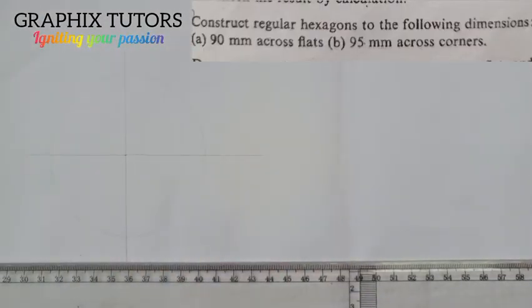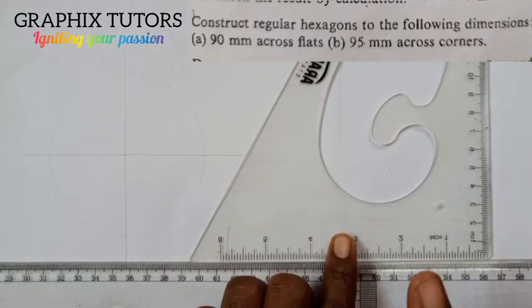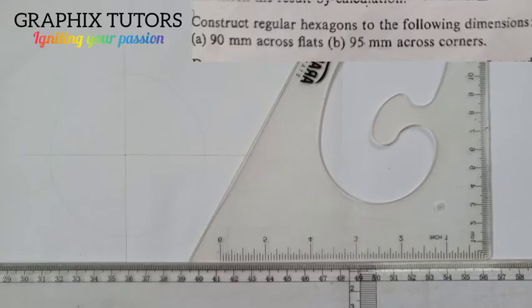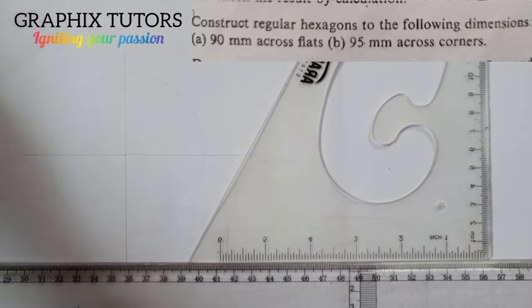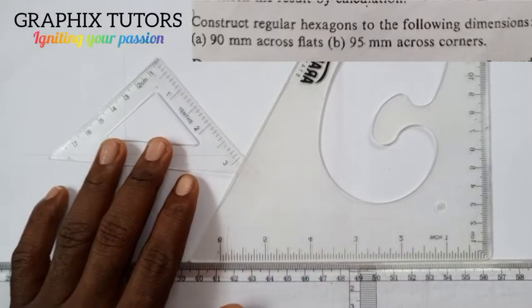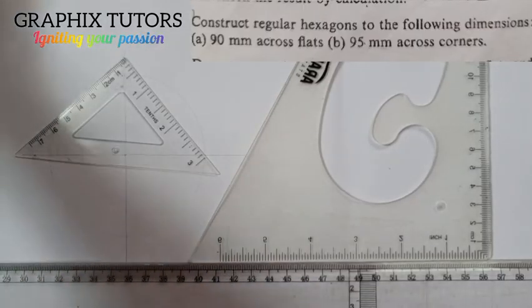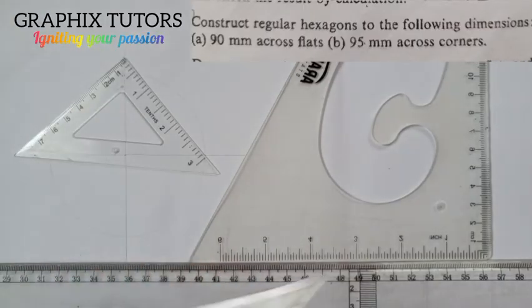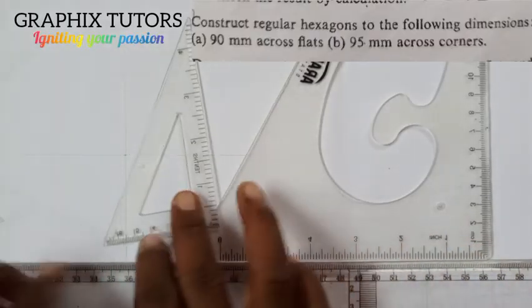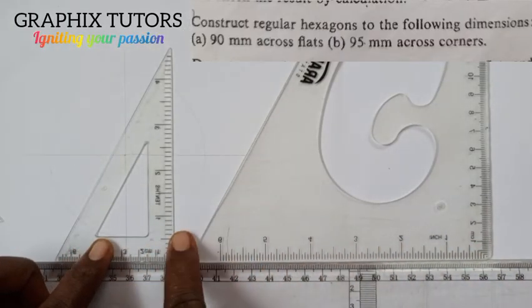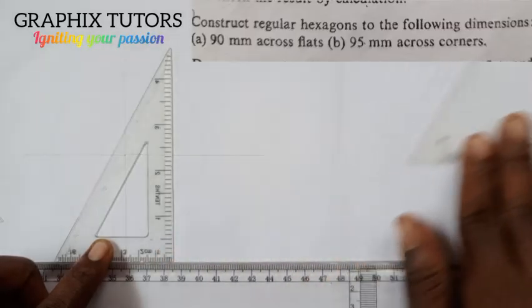We are constructing a hexagon. Across flat means you are going to use the edge of your set square — the 60-degree one, not the 45-degree one. This one is 45 and this one is 60, so you use the 60-degree edge. This larger one and this smaller one are the same angle, just different sizes.